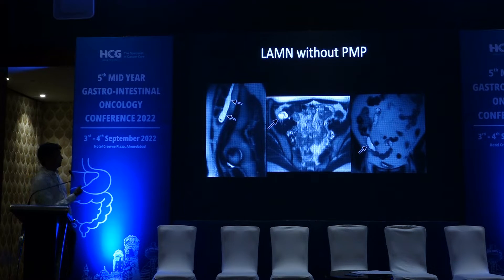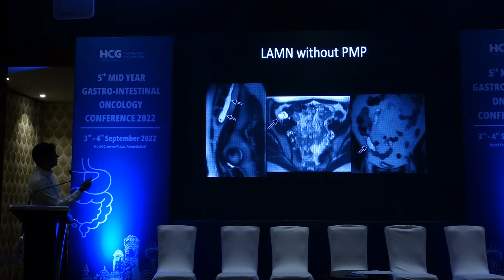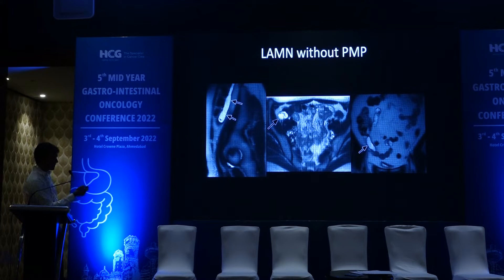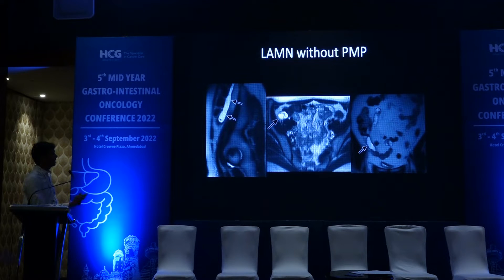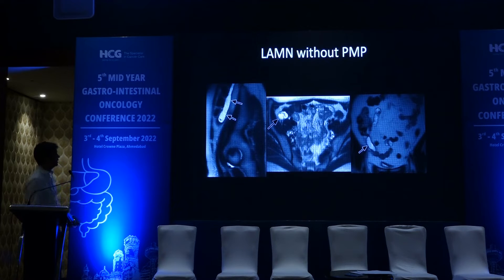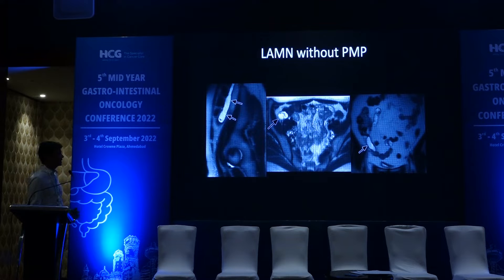These are the MR images — sagittal, axial, and coronal. There is a linear tubular structure with internal septations at the base and no peri-appendiceal lesion seen. You are not able to see any peri-appendiceal fat stranding or any fluid collection except a thin anterior fluid strip. So this is a low-grade appendiceal mucinous neoplasm.